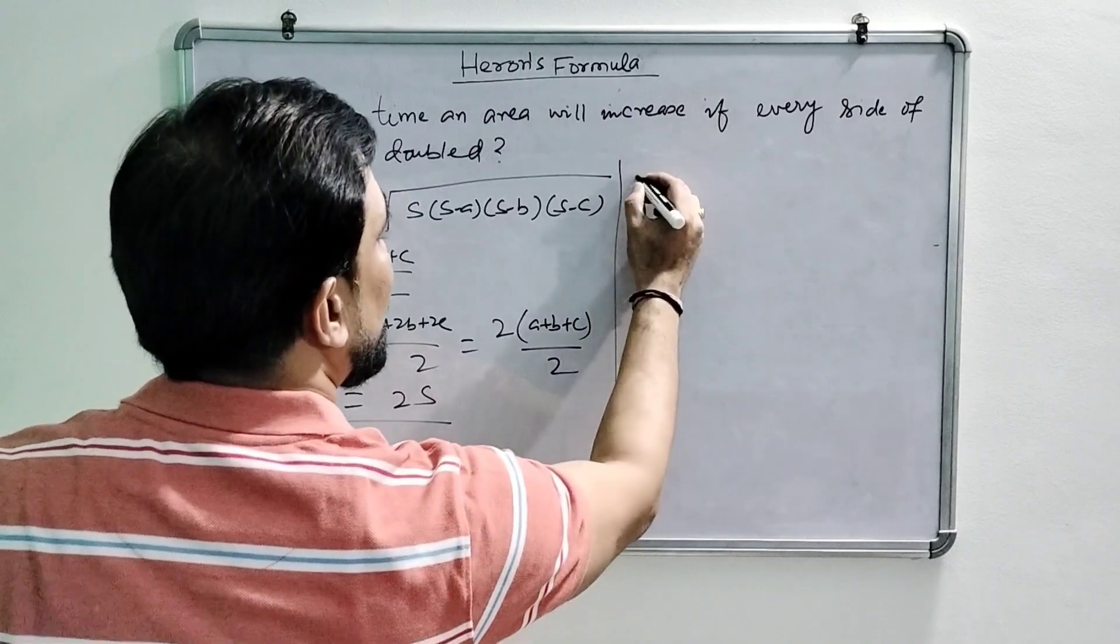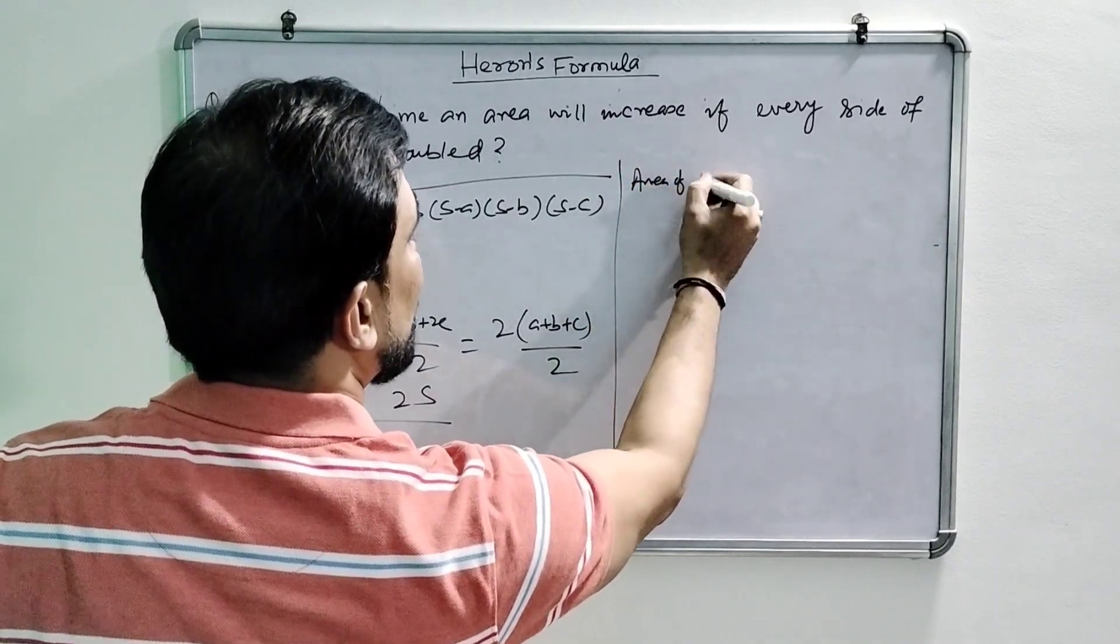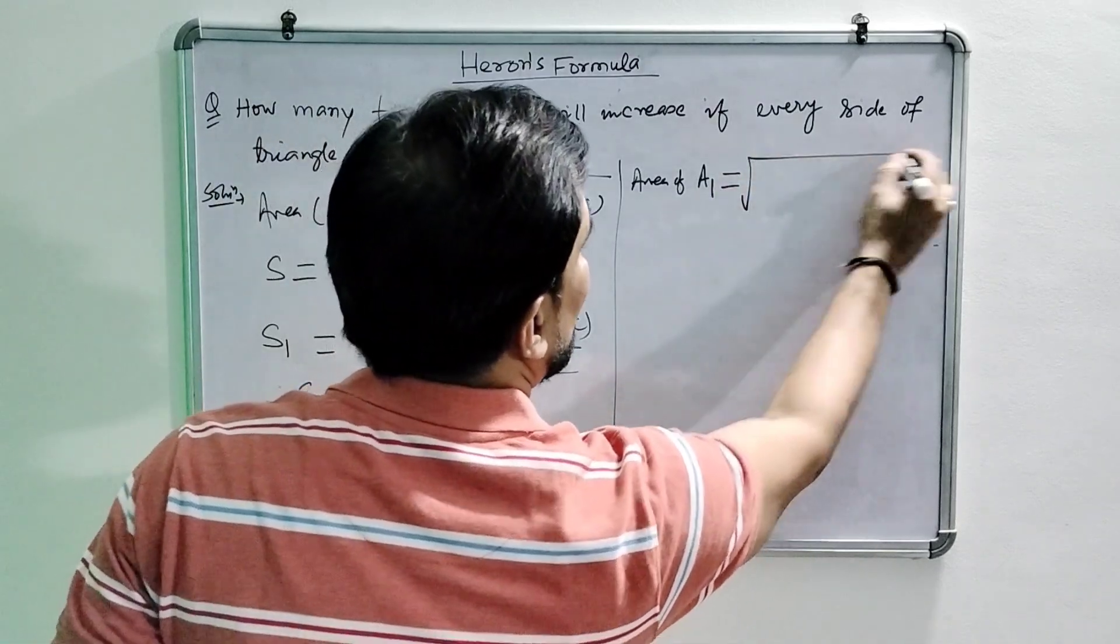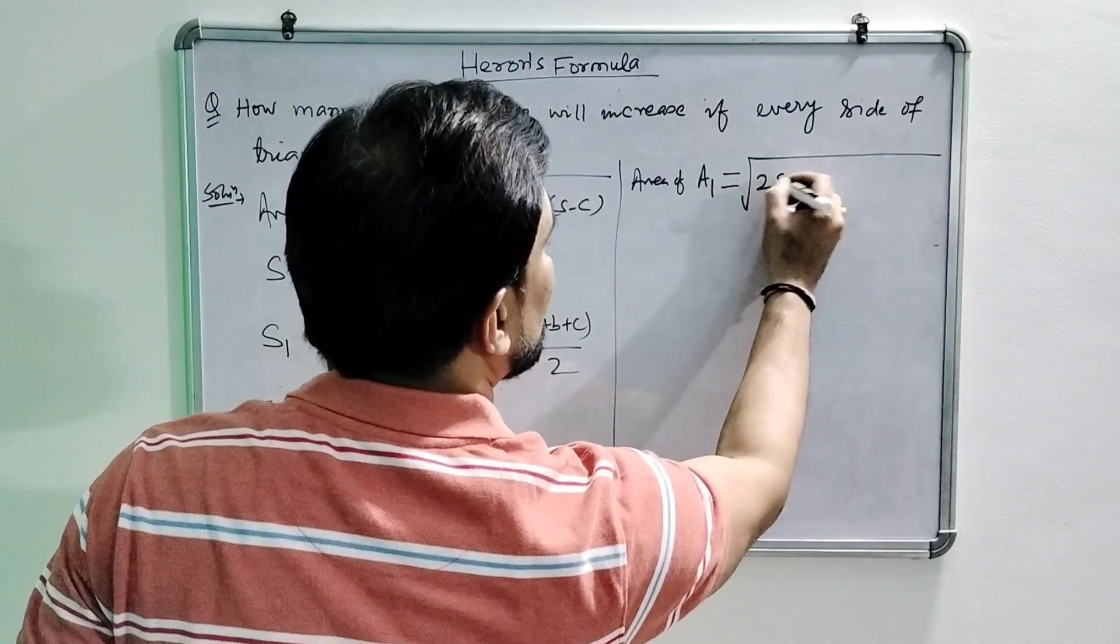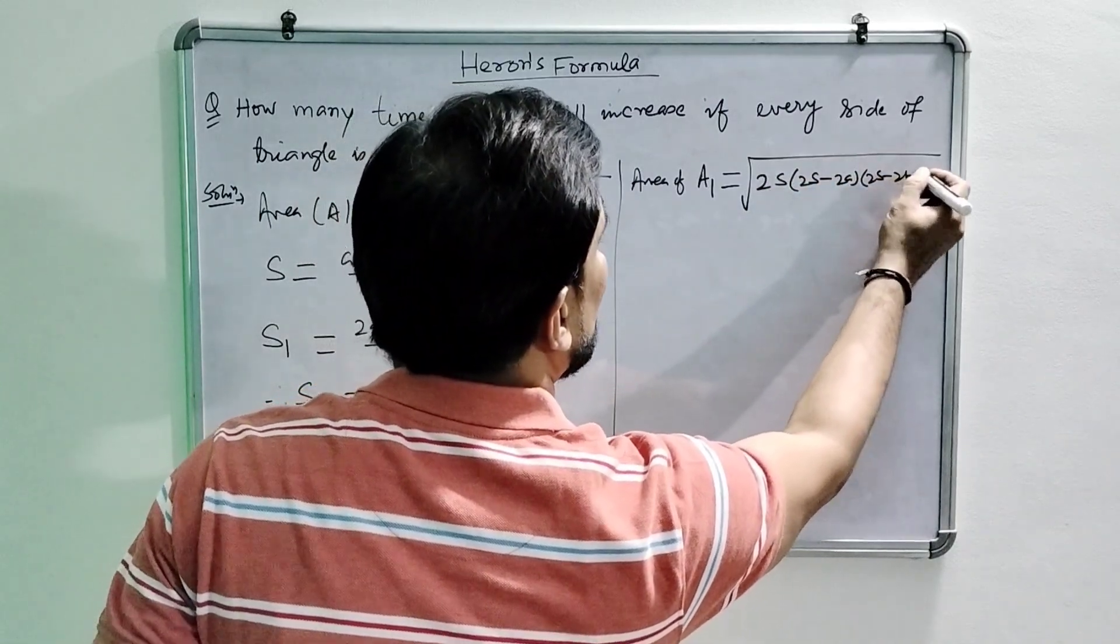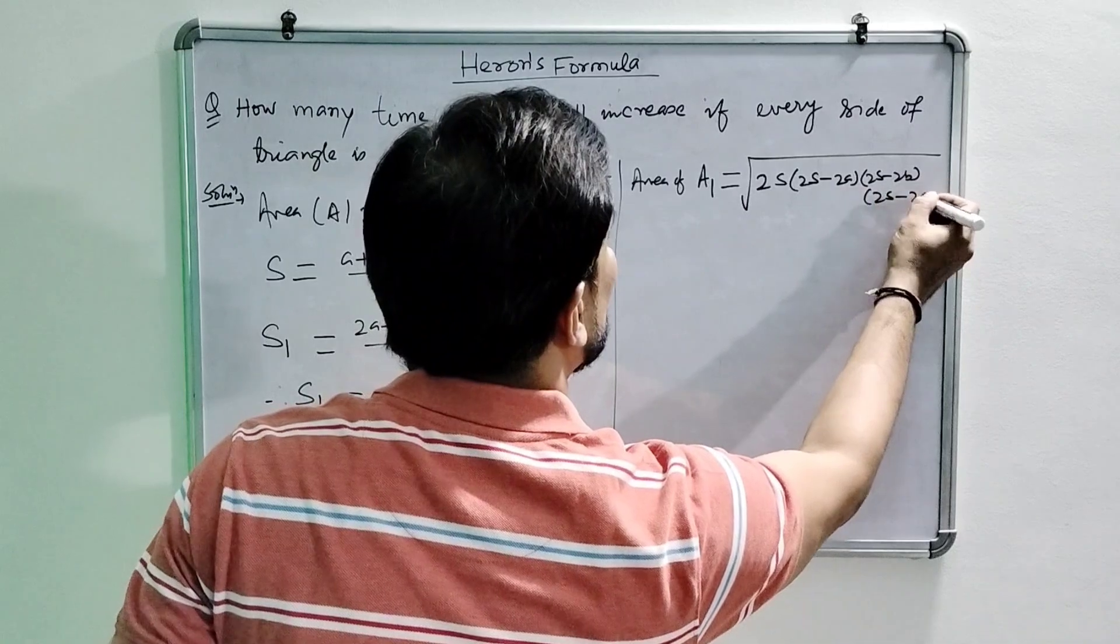Now find the area, area of new triangle with double sides is a1, so in place of s there will be 2s. So 2s minus 2a, 2s minus 2b and 2s minus 2c.